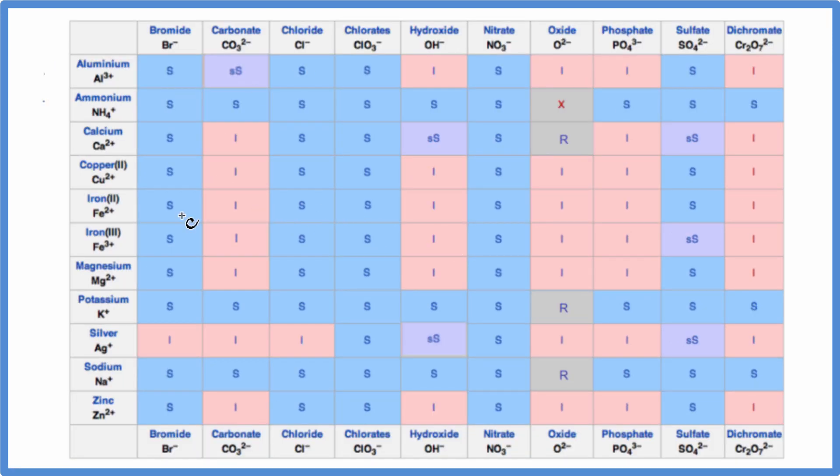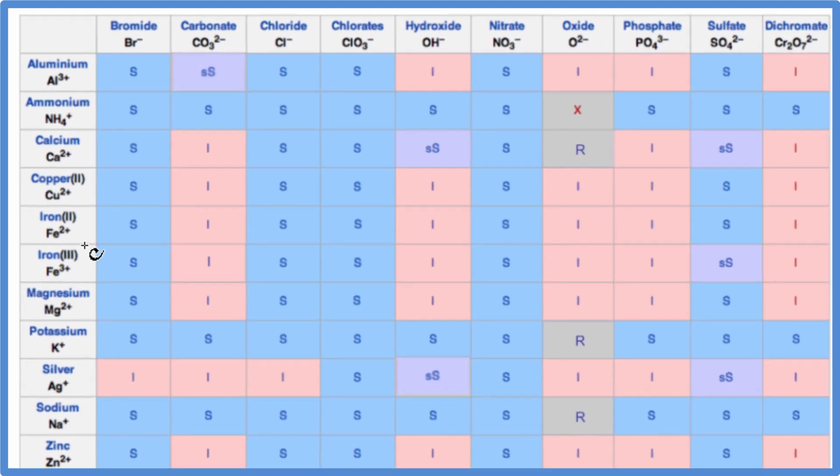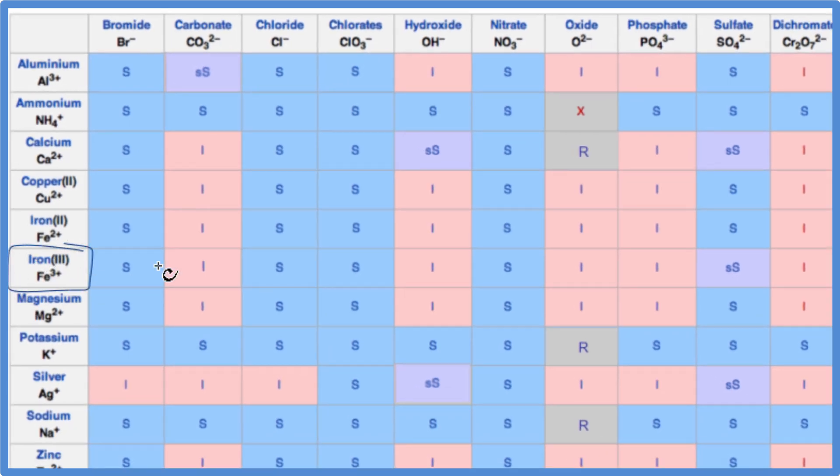So, here's our solubility table. We find iron 3 right here. This is iron 3, and then we're going to find the sulfate up here. So, we'll go over, and we'll go down, and we see SS.